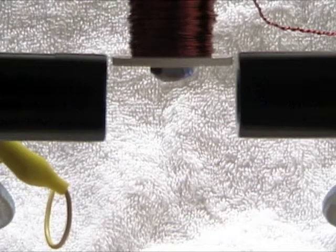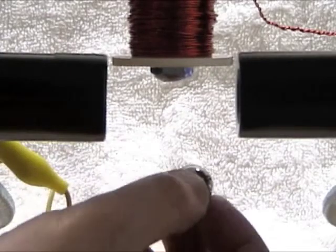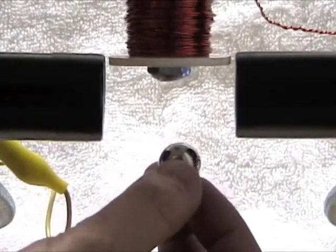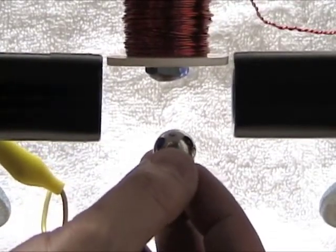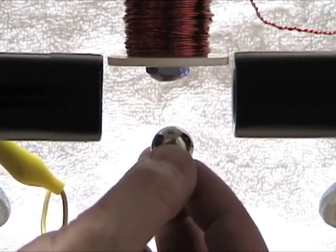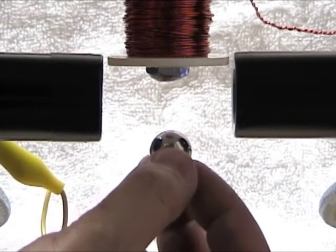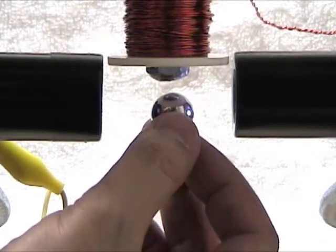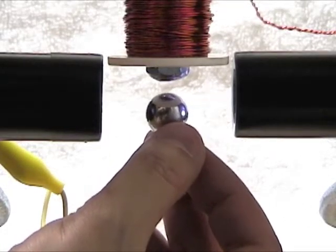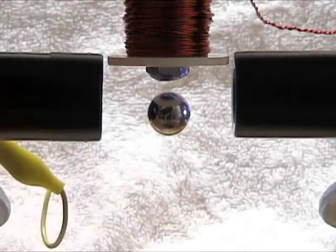So zooming in here on the electromagnet you can get a better view. I'm going to insert a steel ball under the magnet and as soon as I break this light beam the microcontroller will see that there's something there and it's going to try to support it. So there we go.